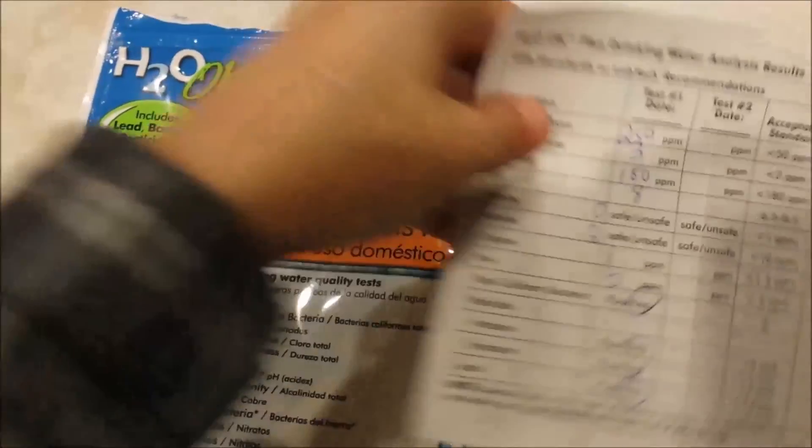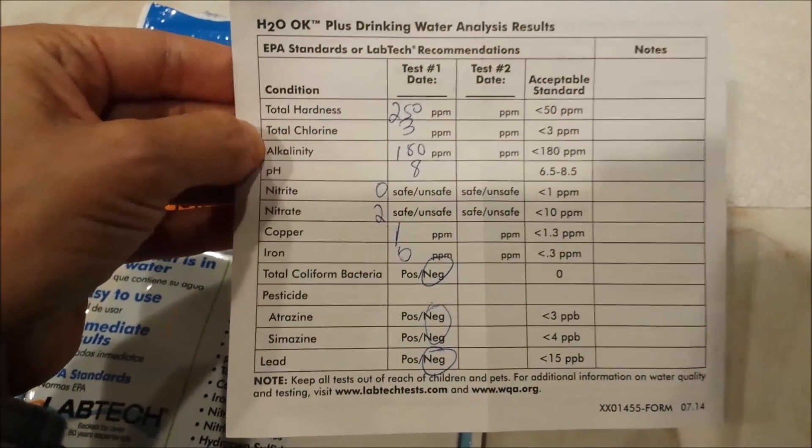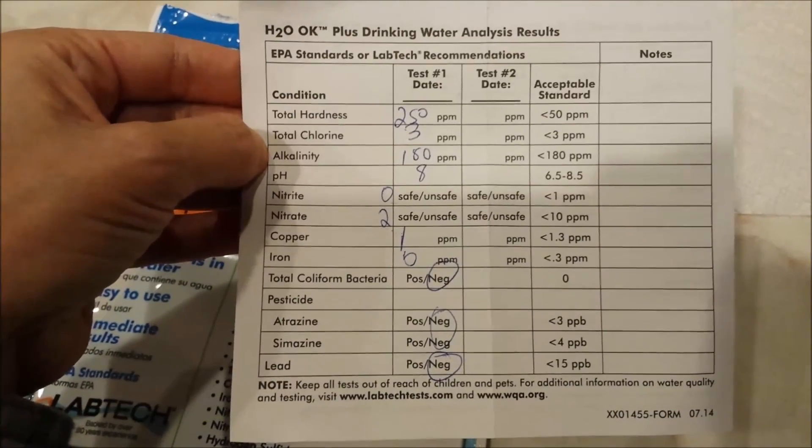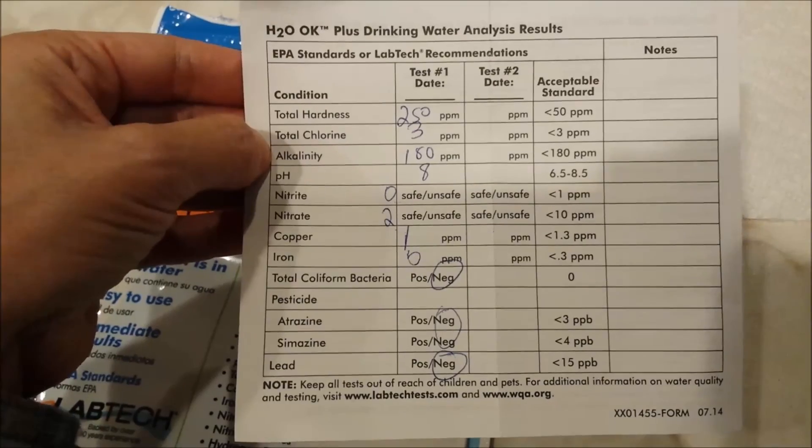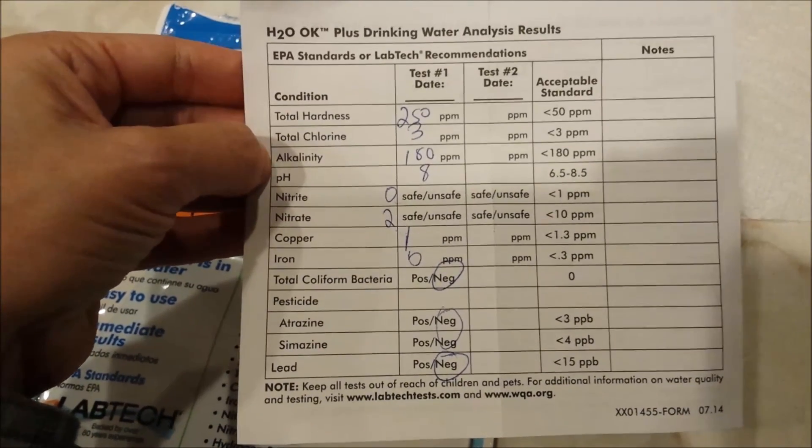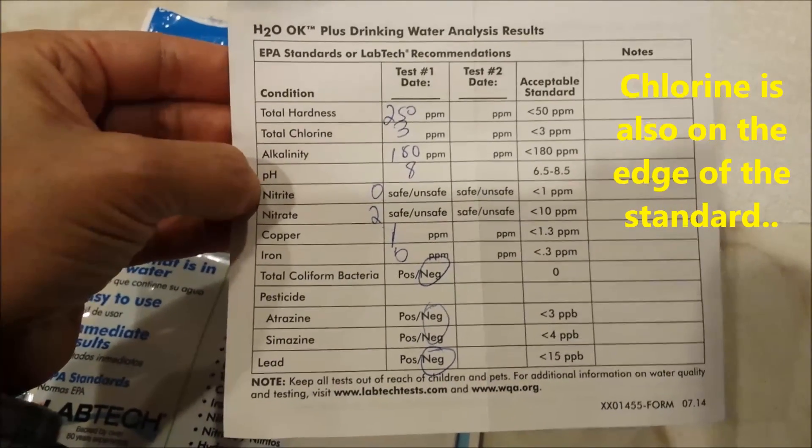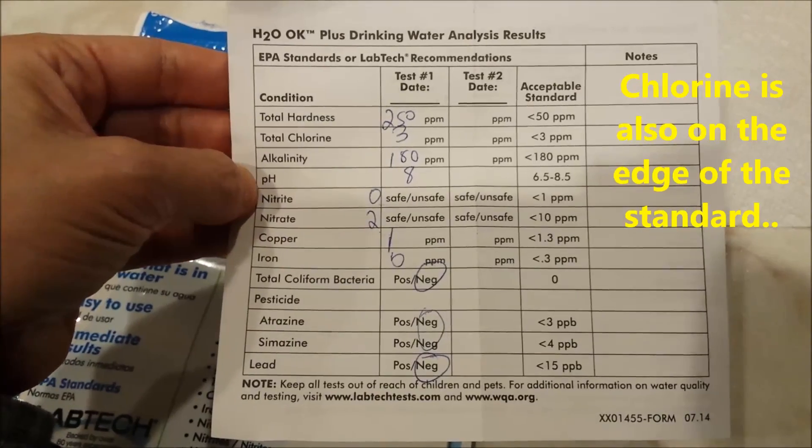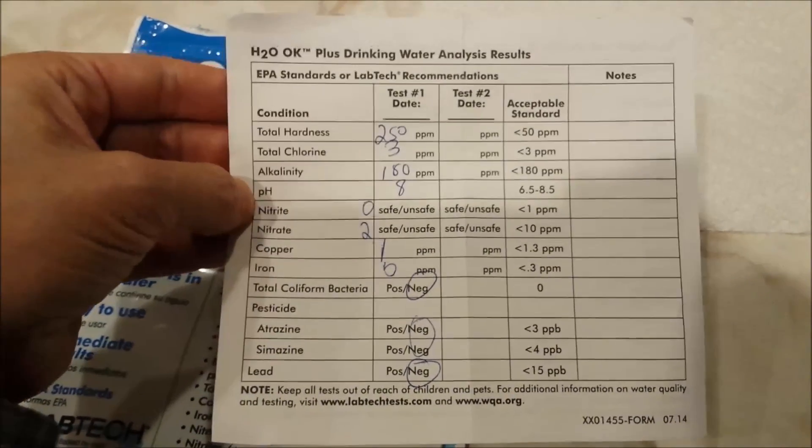We've completed our test. Our little score card shows that the only thing our water exceeded the recommended levels of is hardness. Hardness is pretty much off the chart. Alkalinity is at the top of the recommended standard, and pH is at the top. But there's nothing that really indicates that it's unsafe. I hope this is helpful. Thank you.